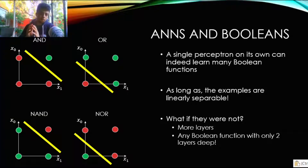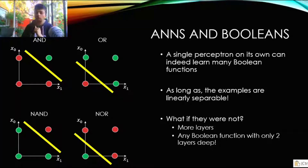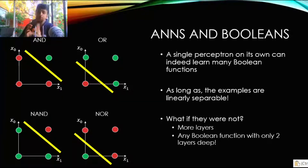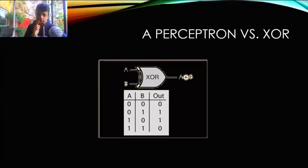In conclusion, a single perceptron can indeed learn many boolean functions, as long as they are linearly separable. If they're not, you need more layers. A perceptron is a neural network with only one layer containing one neuron — the simplest type. But there are functions that are not linearly separable and a perceptron can never handle those. For example, the famous XOR function — I'll show you that its examples are not linearly separable.